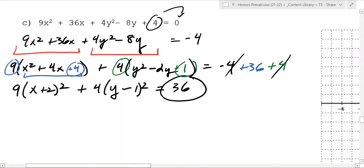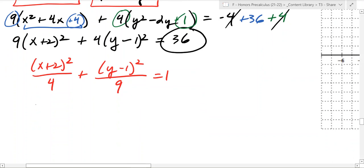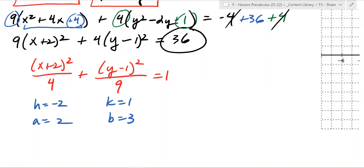But it needs to equal 1, so divide everything by 36, and you get x plus 2 squared over 4 plus y minus 1 squared over 9 equals 1. Now you can extract all the information: h equals negative 2, k equals 1, a equals 2, and b equals 3. Then you can use this information to find the center, minor and major axes, vertices, and graph the foci.